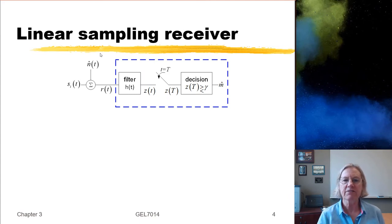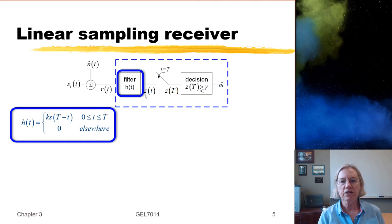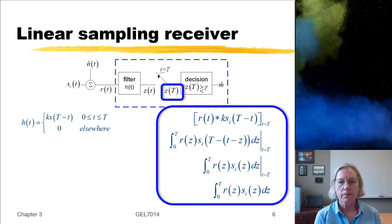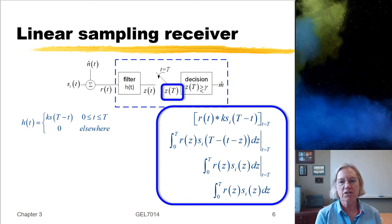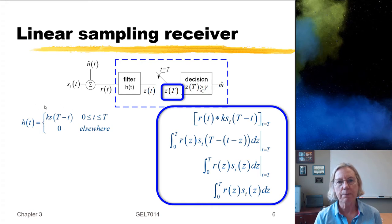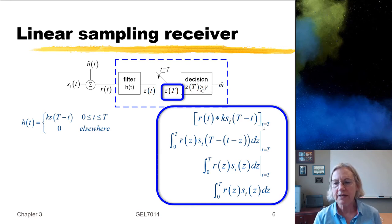Going back to the linear sampling receiver, this was the form of the receiver: a filter, a sampling, and then a decision rule. We found that the filter, in order to maximize the signal-to-noise ratio, should be matched to the signal transmitted. So let's look at the linear sampling receiver and see what the decision statistic looks like when we have used the matched filter. To find the decision statistic, I look at the output of the filtering operation. The output is going to be the convolution of the input with the impulse response — the matched filter impulse response. I'm taking the convolution, which is a function of time after the convolution, and we're going to sample it.